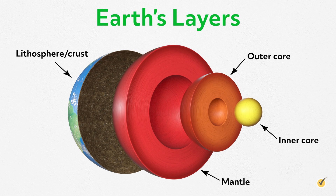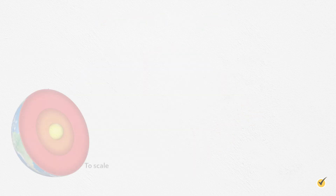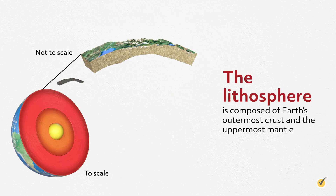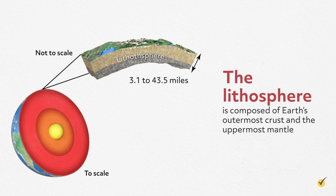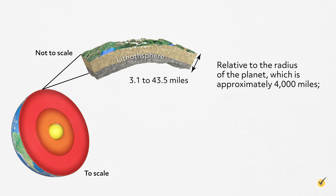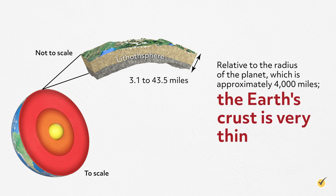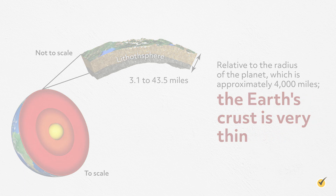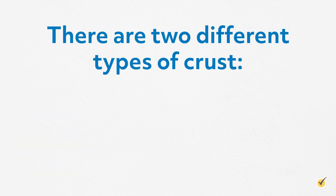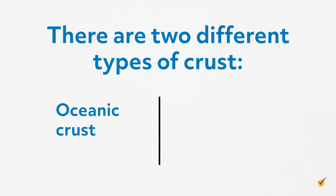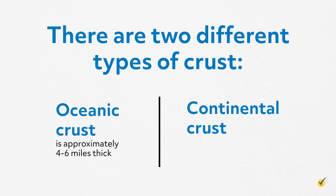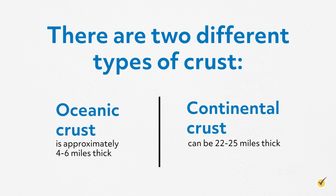Let's start at Earth's surface and work our way in. First up is the lithosphere. The lithosphere is composed of Earth's outermost crust and the uppermost mantle. Relative to the radius of the planet, which is approximately 4,000 miles, the Earth's crust is very thin. There are two different types of crust: oceanic crust and continental crust. Oceanic crust is approximately 4 to 6 miles thick, while continental crust can be 22 to 25 miles thick.